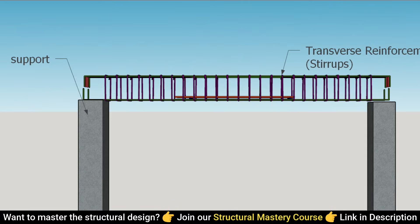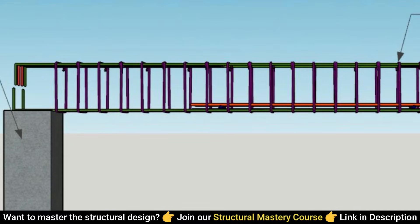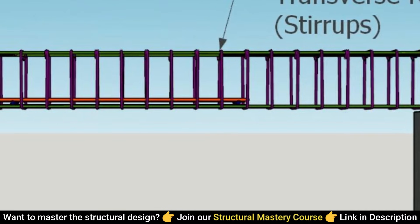Stirrups are usually closely spaced near the beam's support points where the shear forces are maximum. However, in cases mandated by the design, closely spaced stirrups can be distributed along the entire span of the beam.